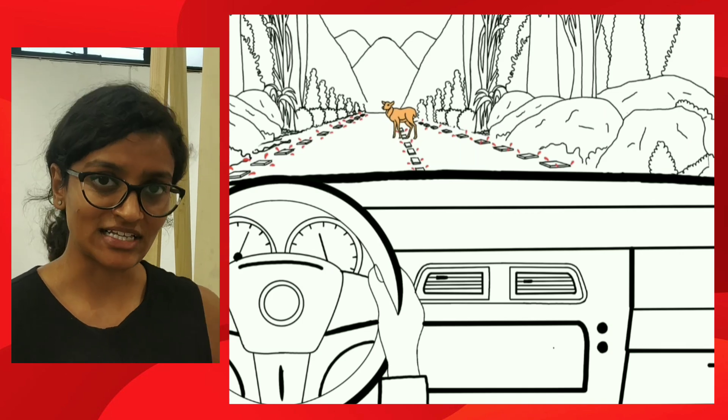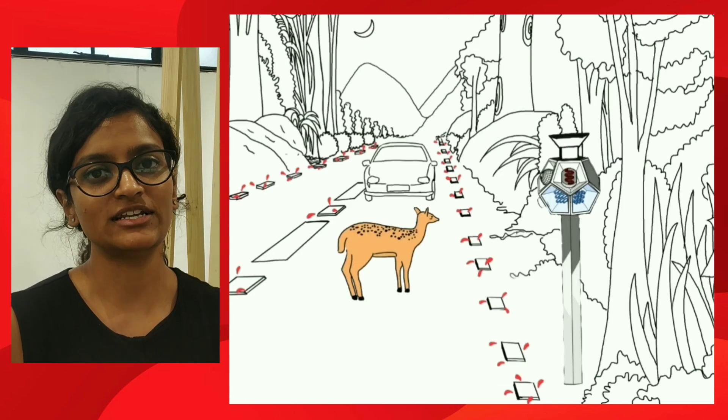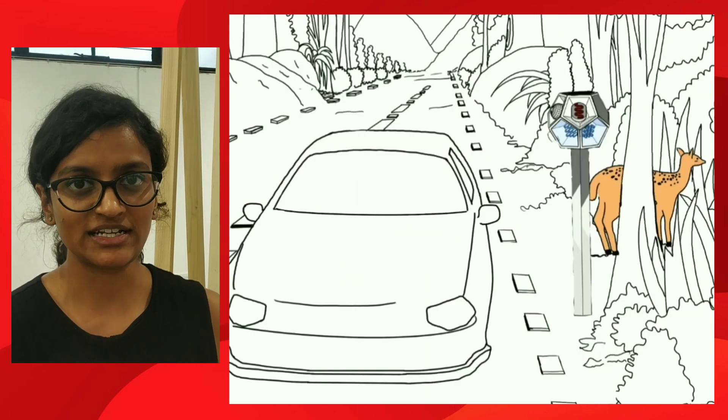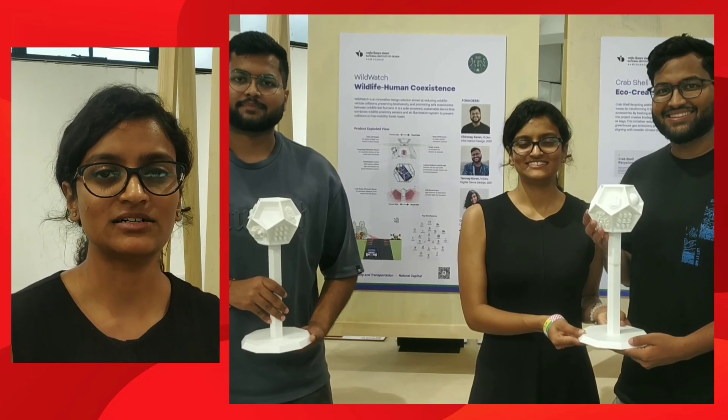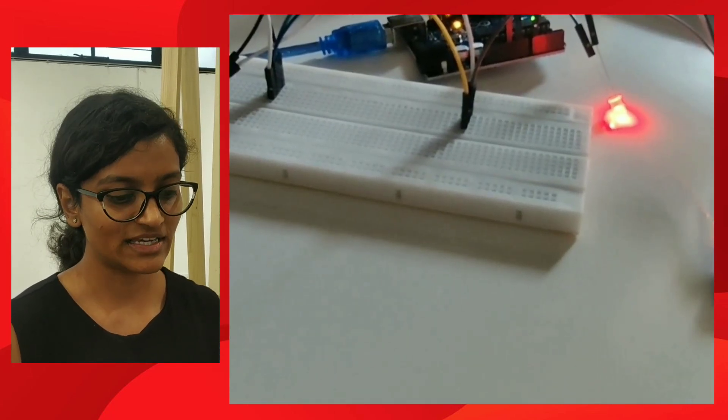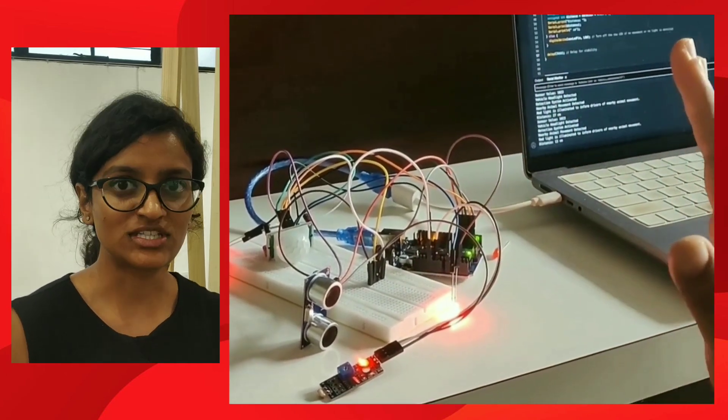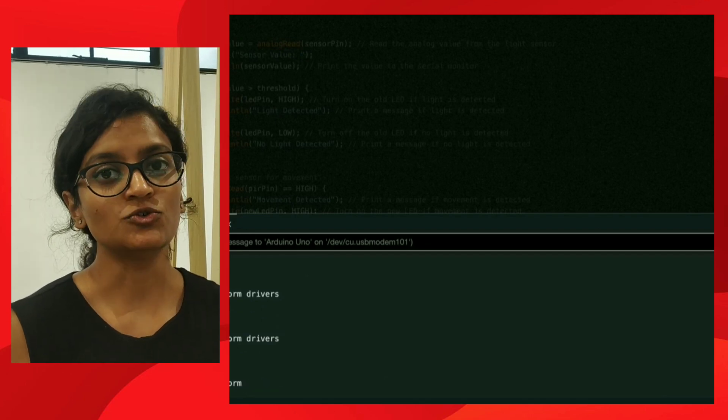Our goal is to help reduce animal-vehicle collisions. By using Wild Watch on roads, we can reduce these accidents. Because the ecosystem has chain links—like a frog's role—saving individual animals helps preserve the entire ecosystem.